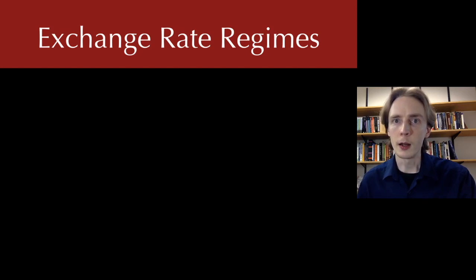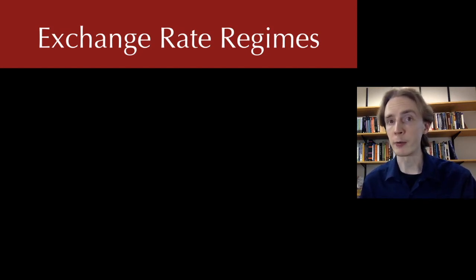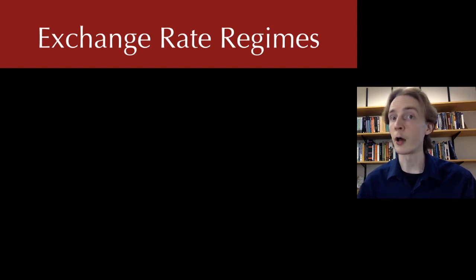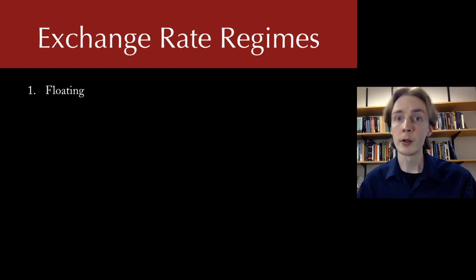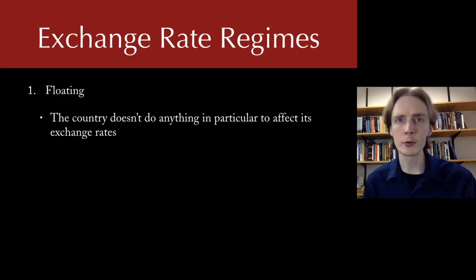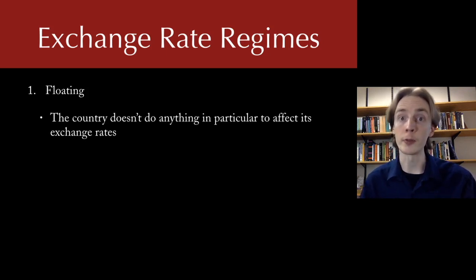To start off, I'm going to introduce three different types of what I'm going to call an exchange rate regime. An exchange rate regime is a way that a country organizes its currency with respect to the exchange rate of other countries. There are three basic ways this can be done. First, a floating exchange rate is where the country has a currency and doesn't do anything in particular to worry about the exchange rate.